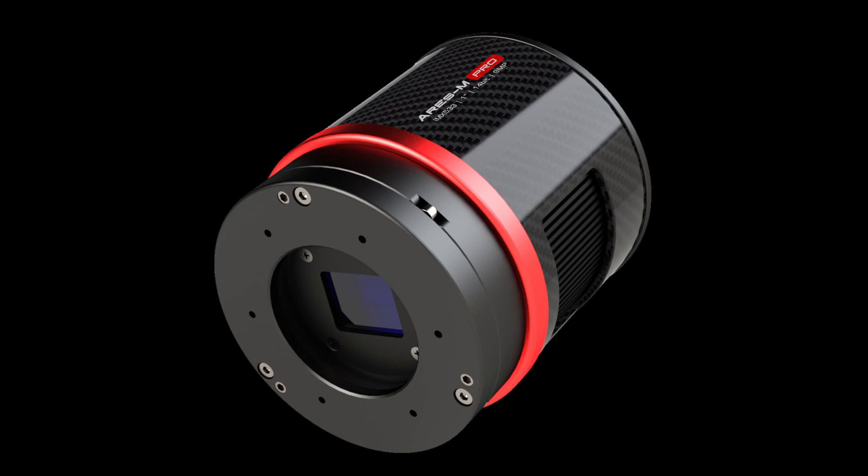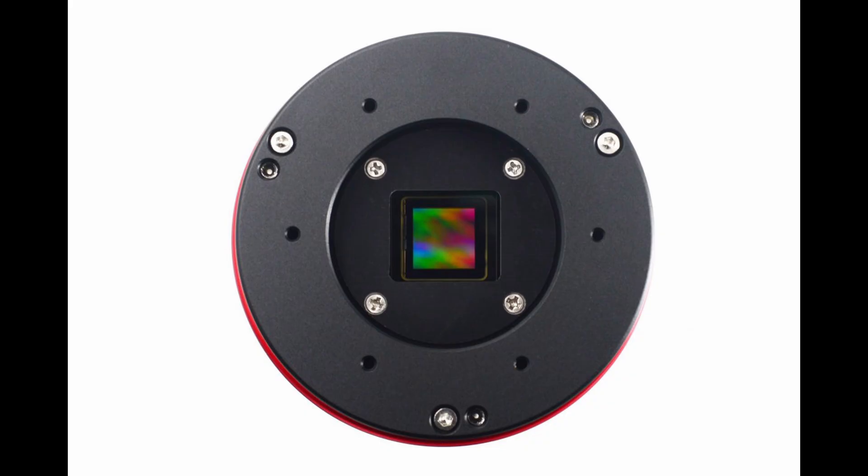You see, one year and five months ago, I bought the Player One Ares M camera, which has the Sony IMX533 sensor on it. And the sensor, as you can see in this image, is shaped like a square.